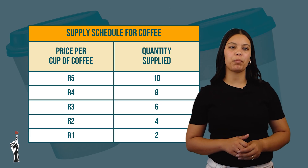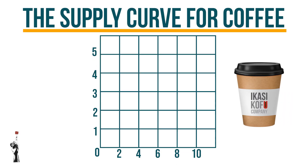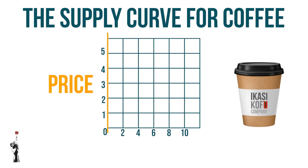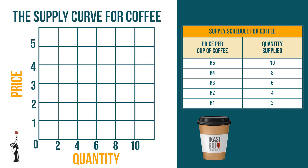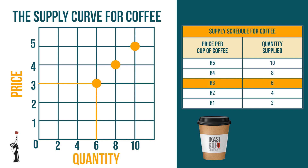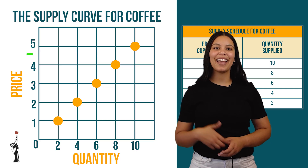We now need to plot the supply curve using the supply schedule provided. We will always start with a heading for the graph. On the graph we will have the price on the y-axis and the quantity supplied on the x-axis. If Kamva sells coffee at five rand a cup, the quantity supplied will be ten cups. If he sells it at four rand per cup, the quantity supplied will be eight cups. At three rand per cup, the quantity supplied will be six cups and so forth. At one rand per cup, Kamva will only supply two cups of coffee. Kamva therefore prefers selling his coffee at a higher price.